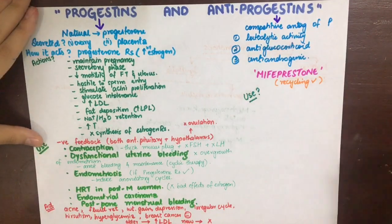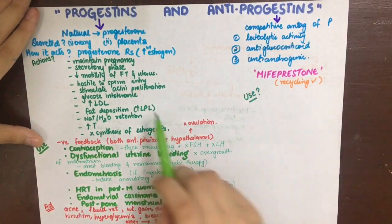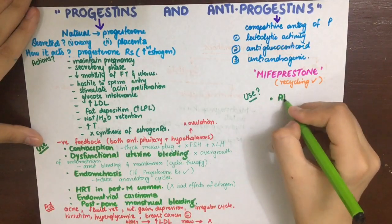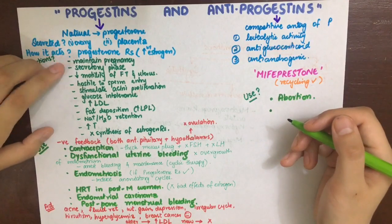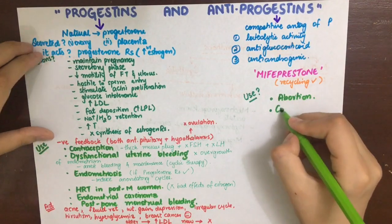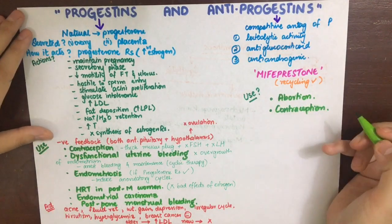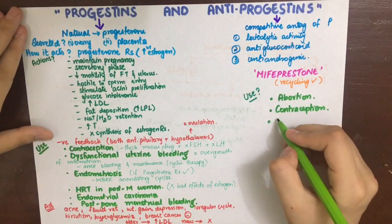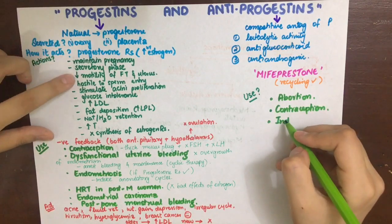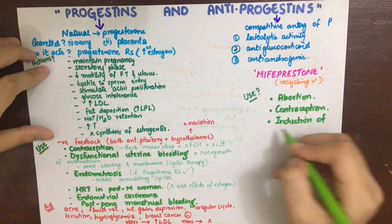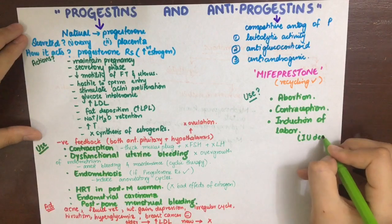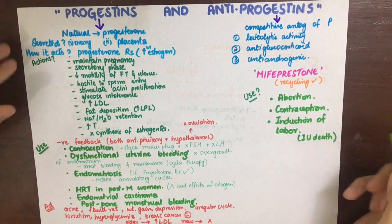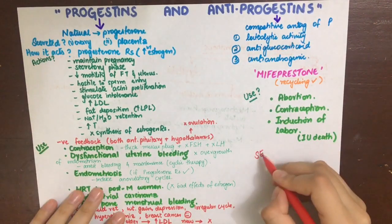Mifepristone is used where we want to antagonize the effects of progesterone. For example, it can be used in abortion because progesterone is responsible for maintaining pregnancy. It can also be used in contraception, as it causes sloughing and shedding of the endometrial layer. Since progesterone decreases uterine contractility, mifepristone does the opposite — it increases contractility and can be used in induction of labor in cases of intrauterine deaths.